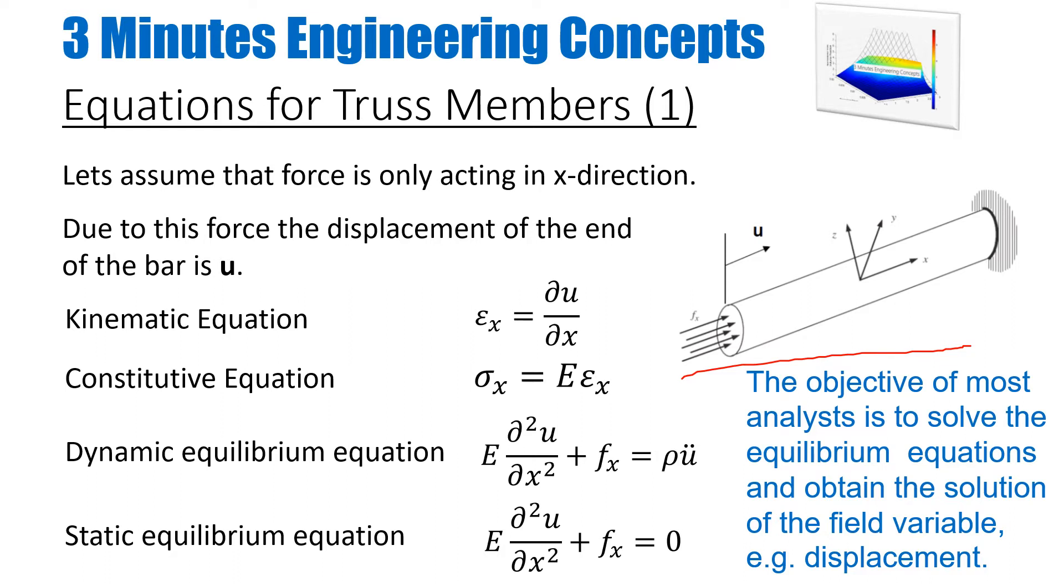I can define the constitutive relationship based on Hooke's law, which relates the stresses with the strains. Again, it's a 1D case, everything is in x-direction. Then, based on the static or dynamic equilibrium coming from the basic laws of motion, I can have these types of balance equations, whether it's a dynamic case or without inertia, which means a static case at the bottom. The objective of most analysis is to solve the equilibrium equations at the bottom and find the solution of the field variable. For example, in this case our field variable will be displacement, so we are trying to find displacement based on the forces provided to us.